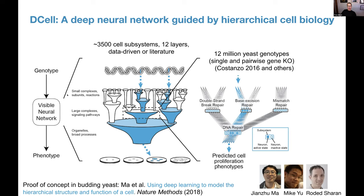One could apply straight machine learning, and eight or nine groups have applied black box machine learning to this problem, developing a variety of models including neural networks. Here, what we try to do is to use a deep neural network, but one where the neurons are not hidden in layers, but are actually entrained to represent different aspects of cell biology.